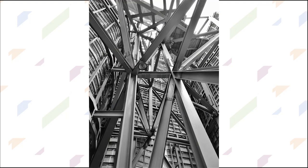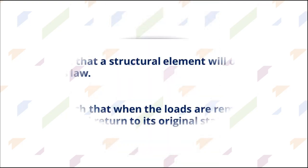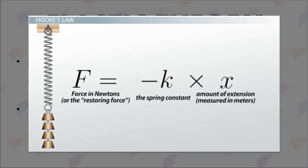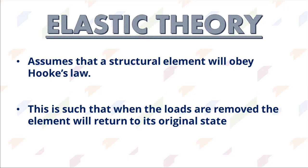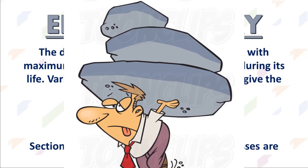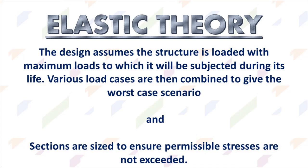The next thing we need to look at are the design theories used in steel structures. First up is elastic theory. Steel structures are basically designed using either elastic or plastic theory. In elastic theory, we assume a structural element will obey Hooke's Law — when loads are removed, the element returns to its original state. Elastic theory assumes the structure is loaded with the maximum loads it will experience during its life, various load cases are combined for the worst-case scenario, and sections are sized to ensure permissible stresses are not exceeded.